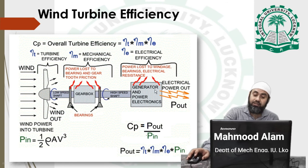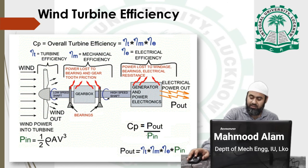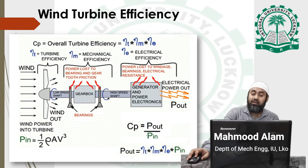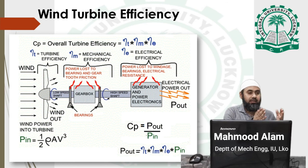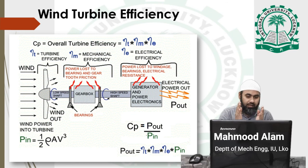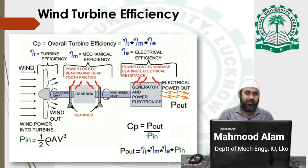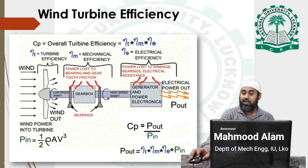For the electrical generator efficiency, the generator also has various losses — windage losses, bearing losses, and electrical resistance losses. The electrical efficiency is calculated as the power output, meaning the electrical energy generated, with respect to the total mechanical energy available at the inlet of the generator. This ratio is known as the electrical efficiency of the generator. So the three efficiencies are: turbine efficiency, mechanical efficiency, and electrical efficiency.